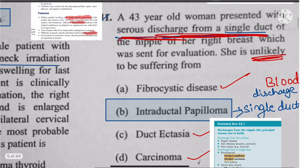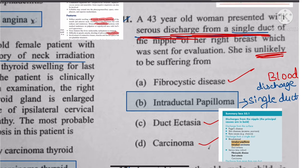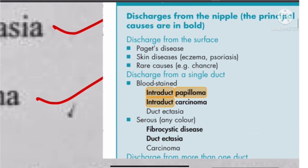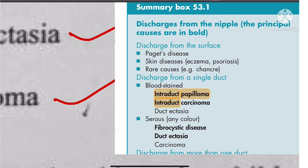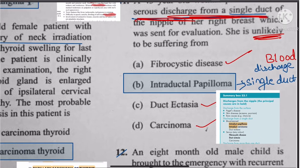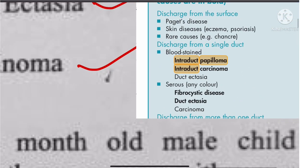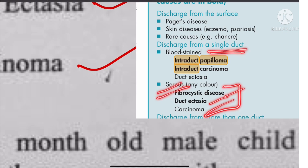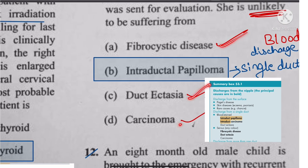Question 11: A 43-year-old woman presents with serous discharge from a single duct. There is controversy on various platforms, but what UPSC will consider is what the book says, not coaching institutes. The book states that for serous discharge from a single duct, there are only three possibilities: fibrocystic disease, duct ectasia, and carcinoma. Intraductal papilloma presents with blood-stained discharge from a single duct. So the answer here points to fibrocystic disease, duct ectasia, or carcinoma.